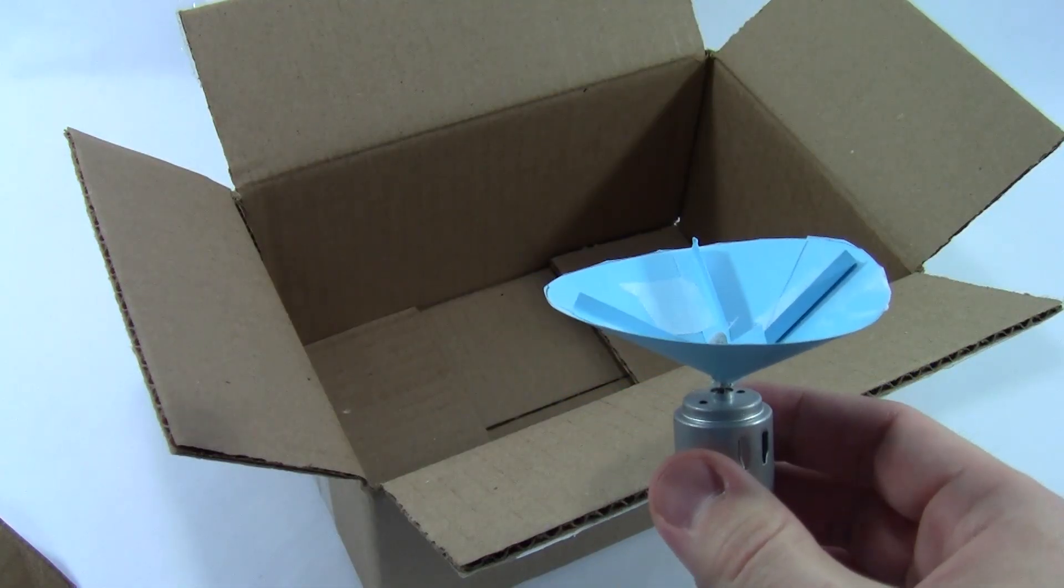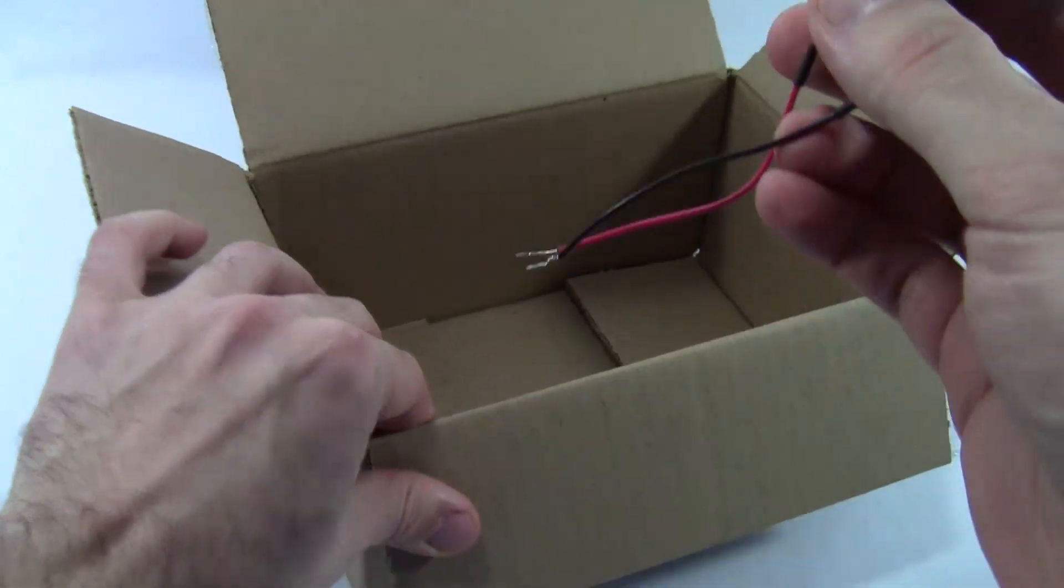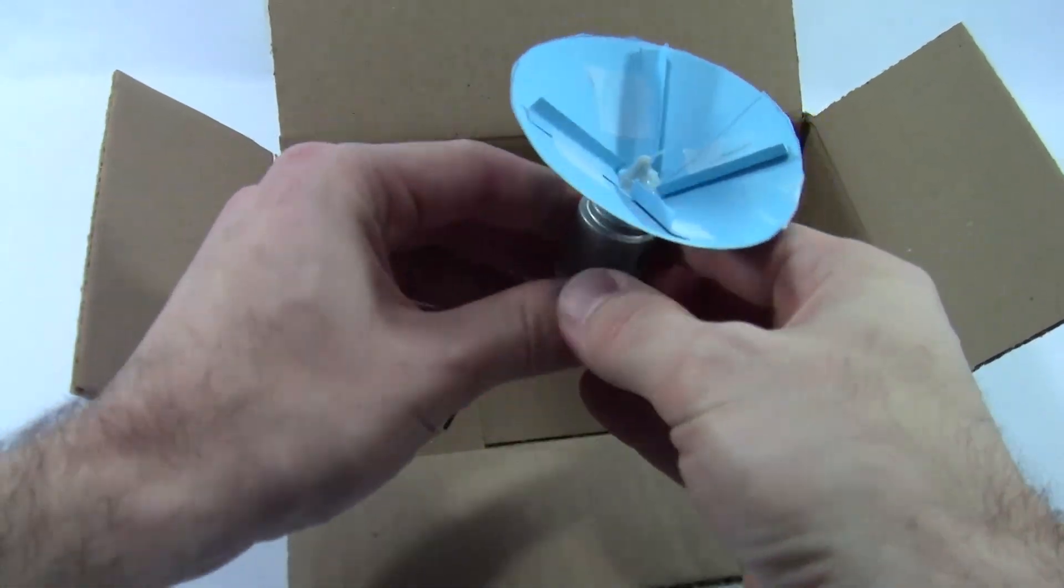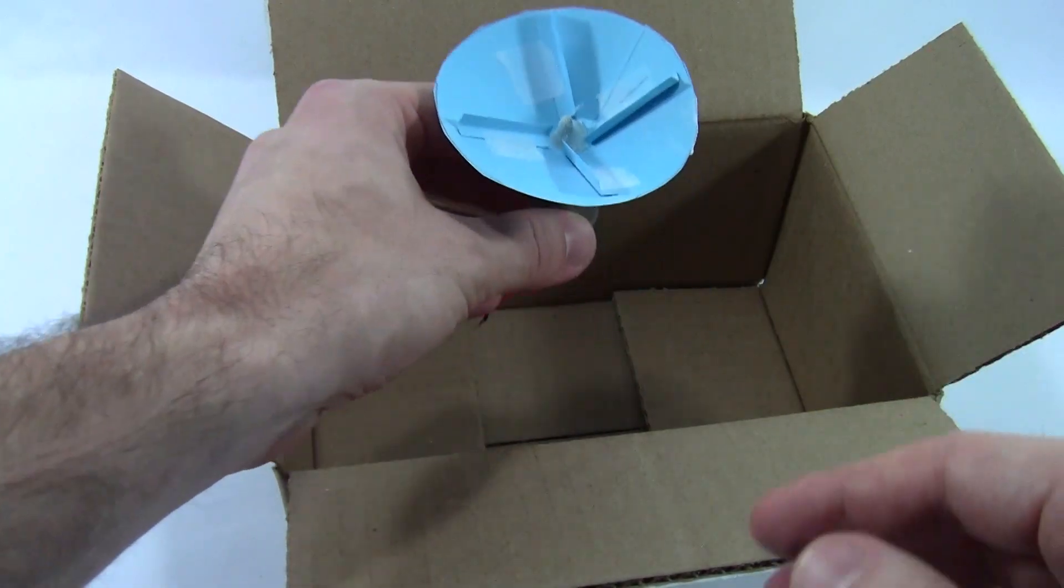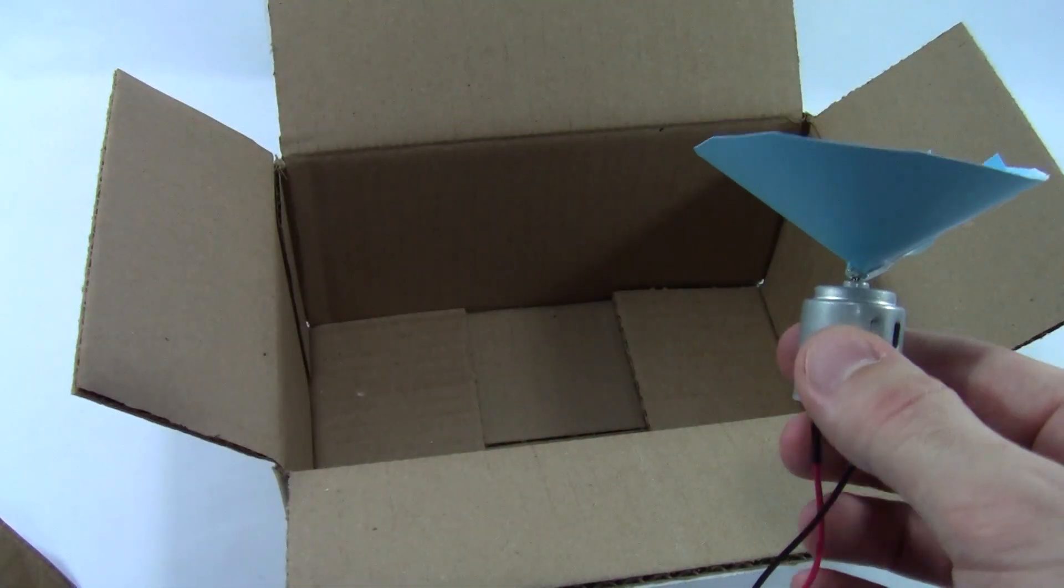So you also need to make sure the motor fits appropriately inside the box. You need it to be low enough such that the lid can close, but high enough such that it disperses the glitter outside the box when it spins and doesn't just throw it around everywhere inside the box, which would kind of defeat the purpose.